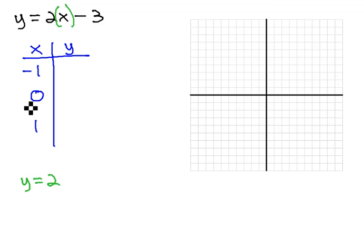Y equals 2x. When we plug negative 1 in for x minus 3, we get y equals negative 2 minus 3, or y is equal to negative 5. When x is negative 1, y is negative 5.